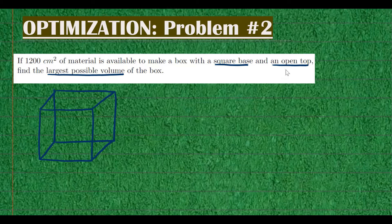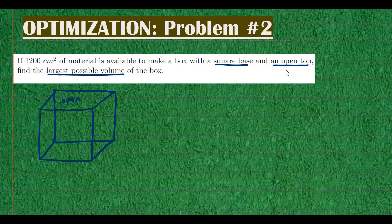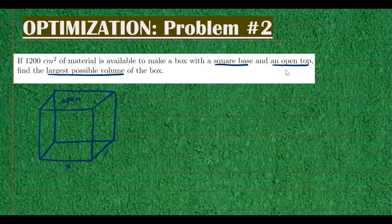Open top means we don't need to consider the top. So this is open. And the bottom is a square, meaning the length and the width are equal. So my drawing doesn't seem like they're equal, but let's suppose they are. So the length and the width, let's call them x. And then the height, let's call it h.